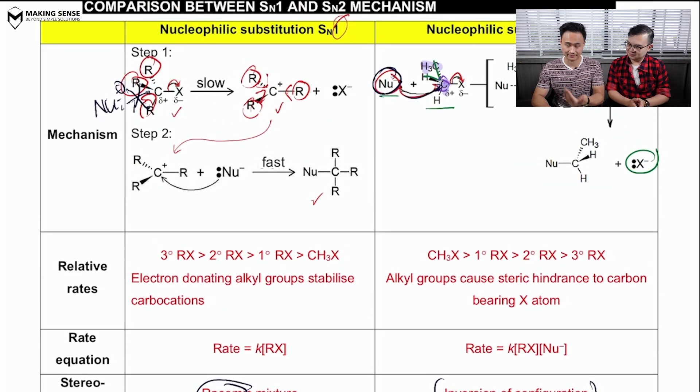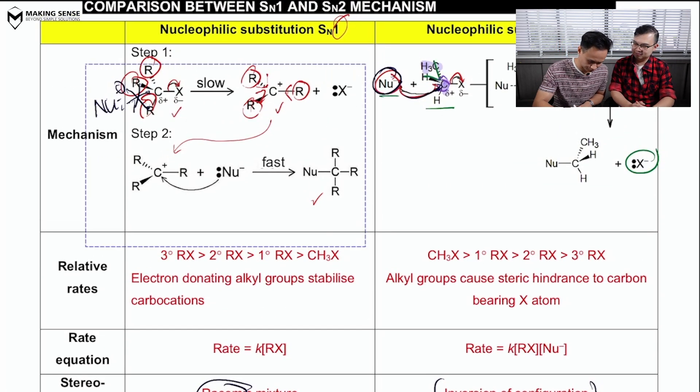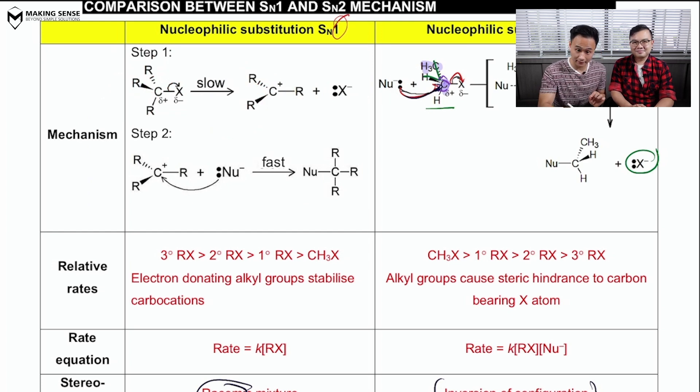Now, what exactly does a racemic mixture mean? It is this. Guys, I want you guys to focus on the carbon in the tertiary carbocation here. Circle it up for me. Notice with me that the carbon, Mr. Long, has three bond pairs, zero lone pairs. What shape is this? It will be trigonal planar, which is flat.